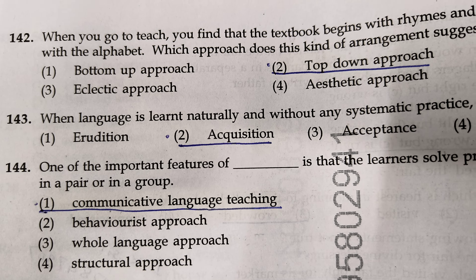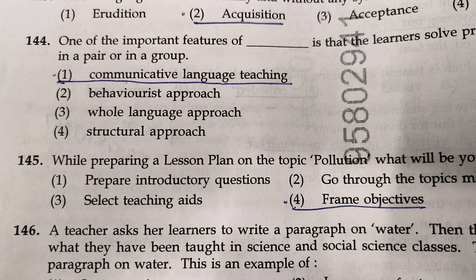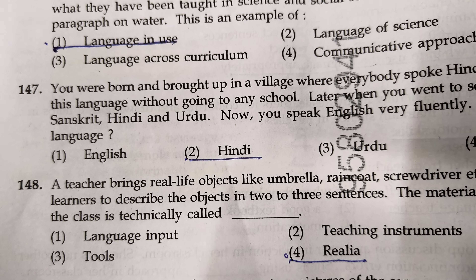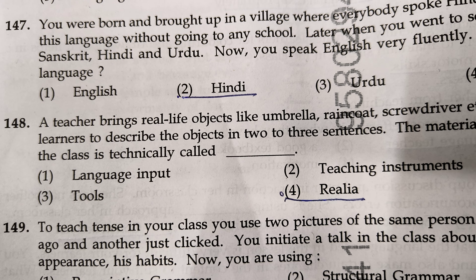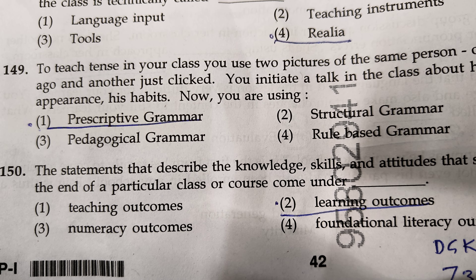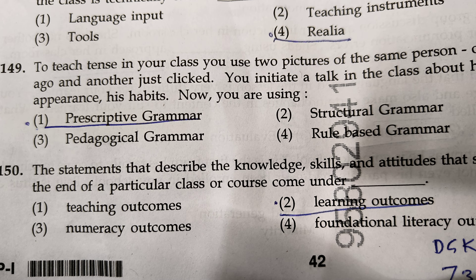143 — when language is learned naturally and without any systematic practice, it is called acquisition. 144 — one of the important features of communicative language teaching is that learners solve problems collectively, either in a pair or in a group — number 1. 145 — while preparing a lesson plan on the topic pollution, what will be your first step — fourth one, frame objectives. 146, number 1 — language in use. 147, second one — Hindi. 148, fourth one — Relia. 149 — prescriptive grammar — number 1. 150, second one — learning outcomes.